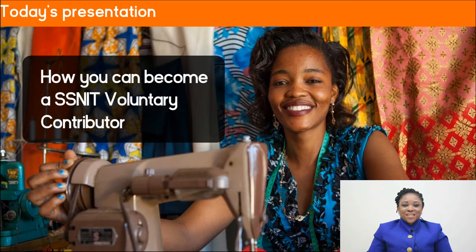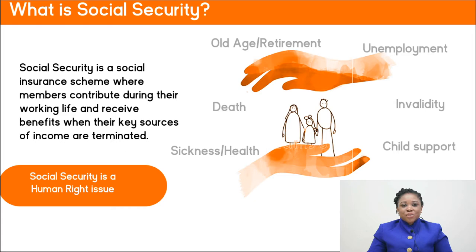Today, our presentation is going to be on voluntary contributions, and the topic once again is how you can become a SNIT Voluntary Contributor. But let's define social security together. Social security is a social insurance scheme where members contribute during their working life and receive benefits when their key sources of income are terminated.